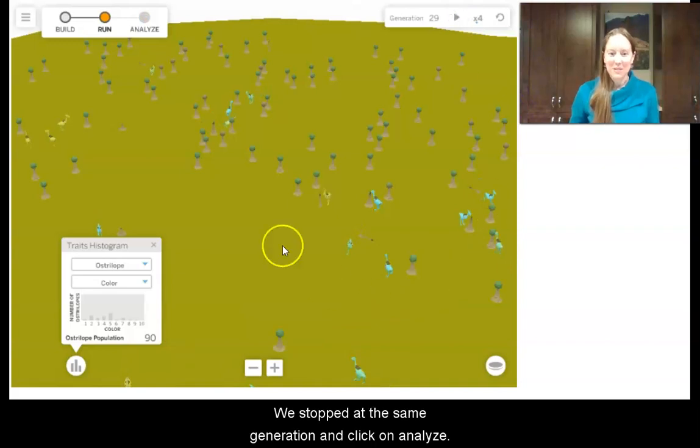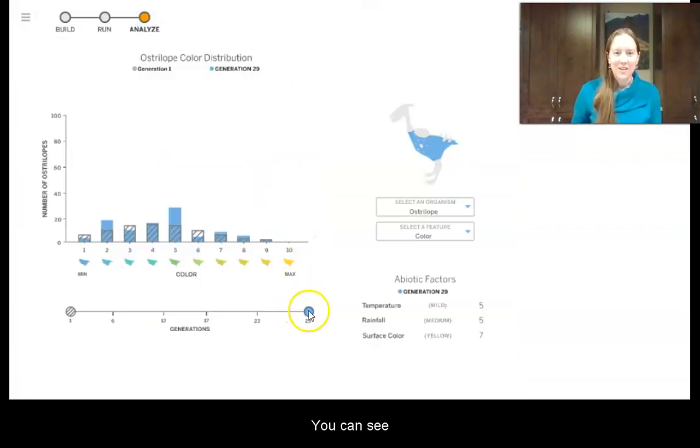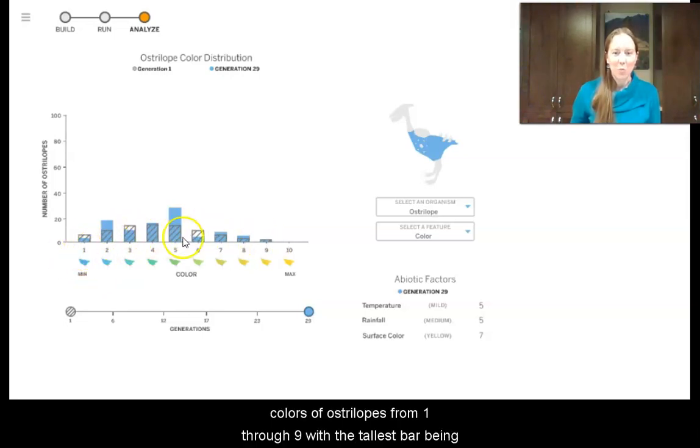We stop at the same generation and click on analyze, and you can see our ending population. We have all the different colors of ostrilopes from one through nine, with the tallest bar being green number five. So what does this tell you about if being yellow is always an adaptive trait? What does this evidence tell you?